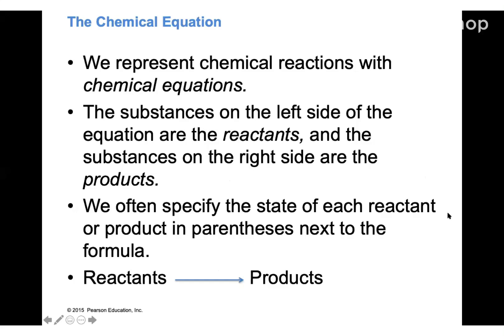Hi everyone, today I'm going to talk about how to balance chemical reactions. A chemical reaction is basically represented with chemical equations. In chemical equations, we have some compounds on the left side which are called reactants, and we have some compounds on the right side which are called products, and there's an arrow in between that shows the reactants go to the products.